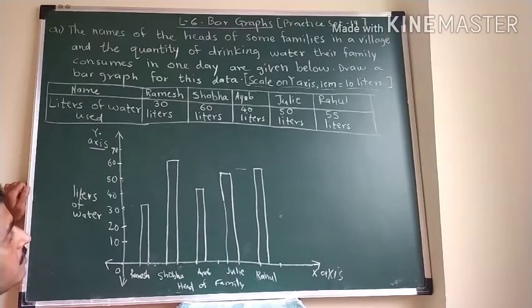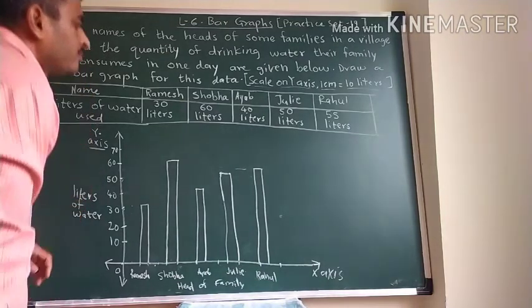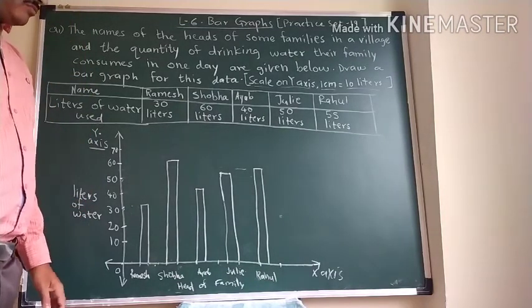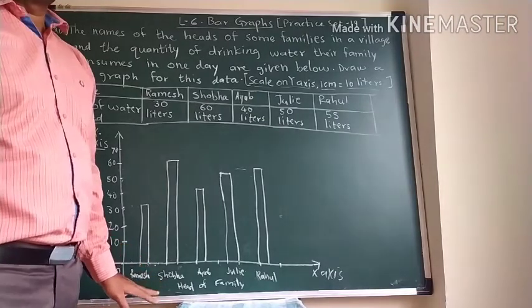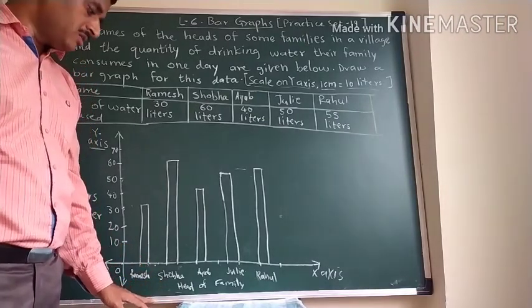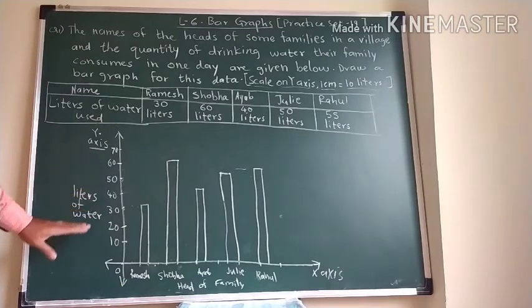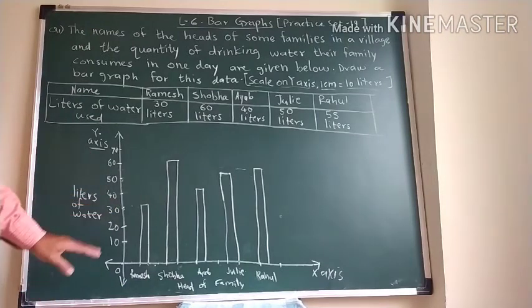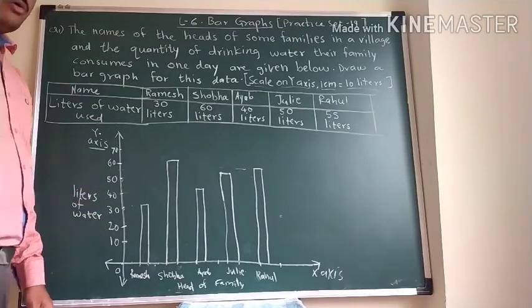So like this we can draw the bar graph. On the X axis we have to take the names, that is called as a category axis. And Y axis we have to take the values. That is called as a value axis.